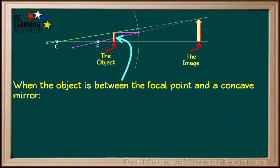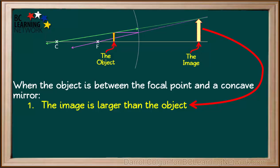We can use this ray diagram to describe the image formed when the object is between the focal point and the surface of a concave mirror. Firstly, we see that the image is larger than the object. A concave mirror used this way acts as a magnifier.